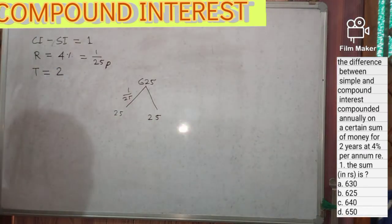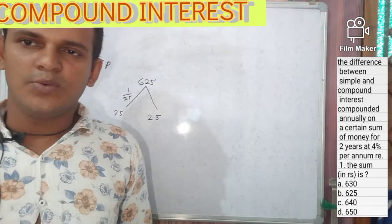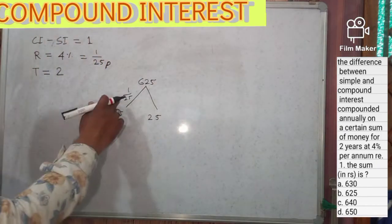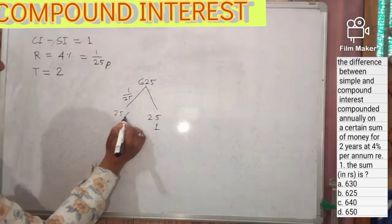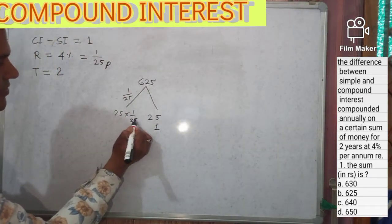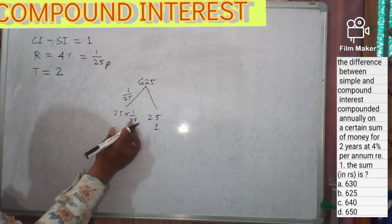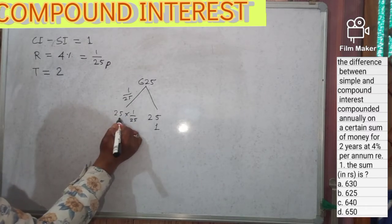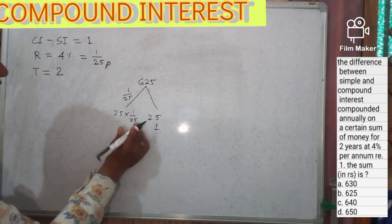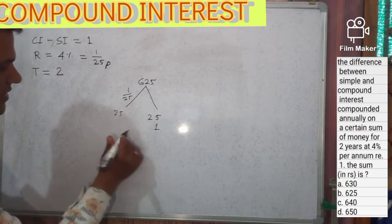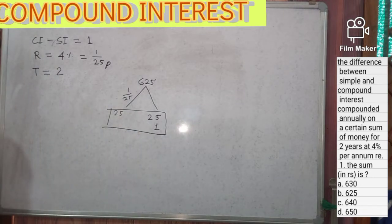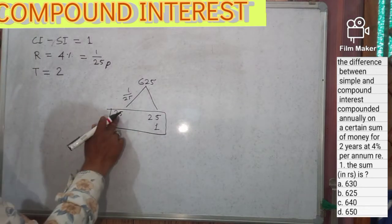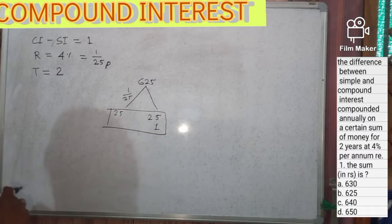The second year will also be twenty-five, but compound interest includes interest on interest. So one by twenty-five of twenty-five will be one — that is the extra interest from compounding. Keep a one.